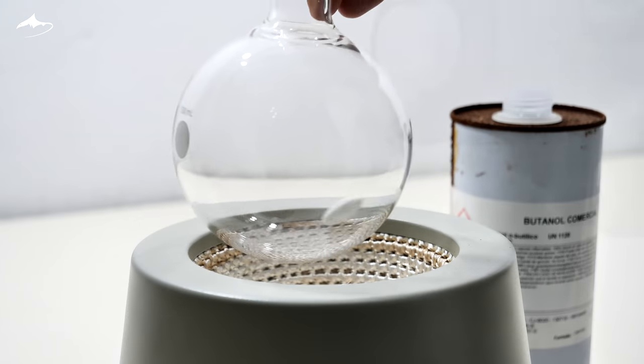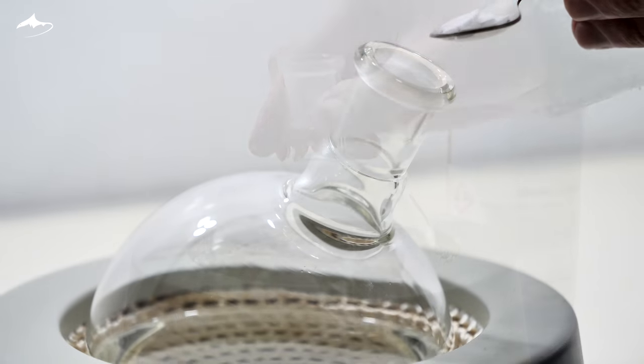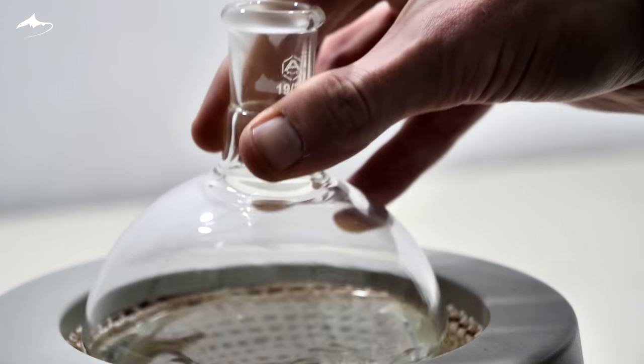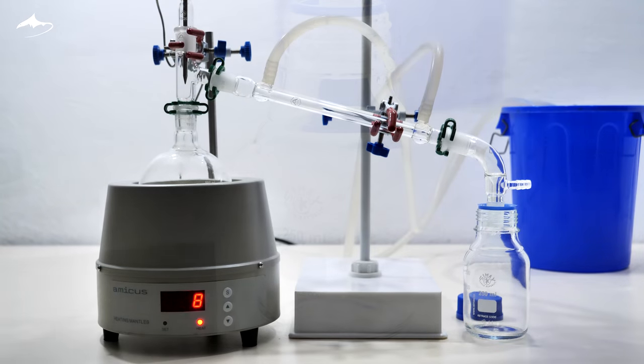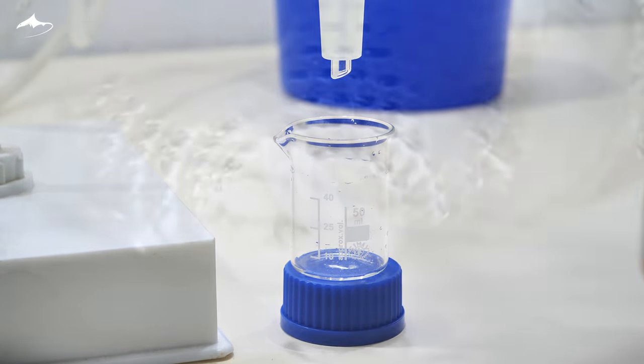First of all, let's get some fresh butanol, as this bottle I have is very old. A few scales of potassium hydroxide are added to remove any organic acids present. Then, a small beaker is placed in order to collect and discard the first fraction of distillate.